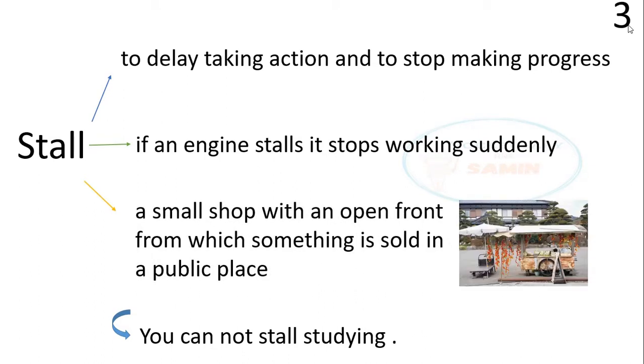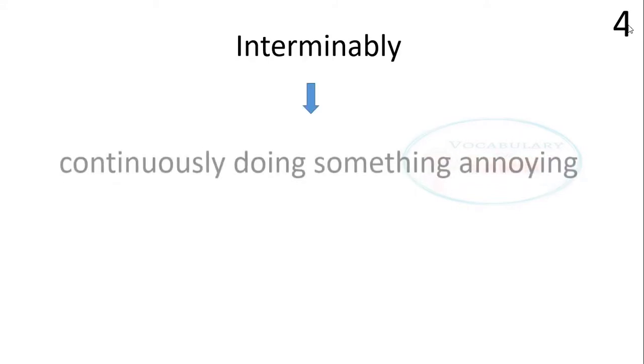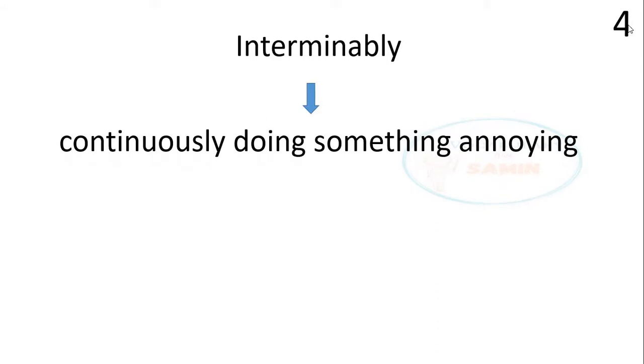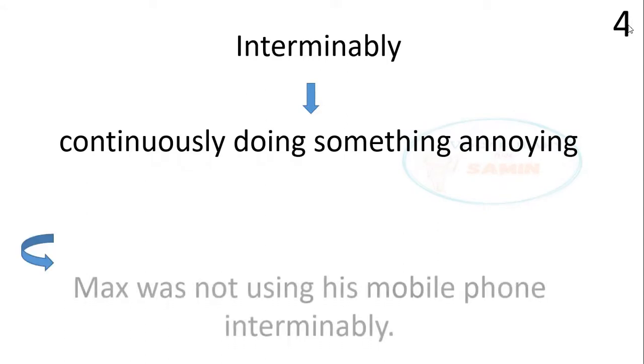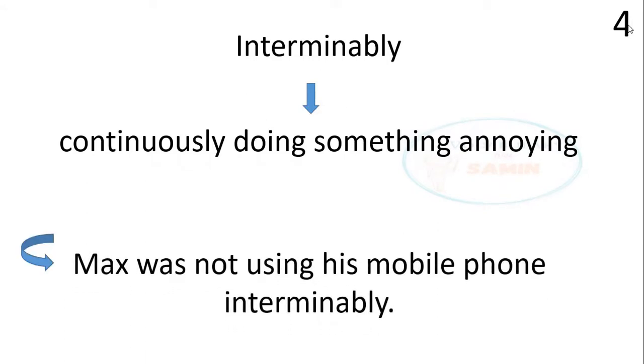The fourth word is 'interminably.' Interminably means continuously doing something in an annoying way. The sentence is: Max was not using his mobile phone interminably.